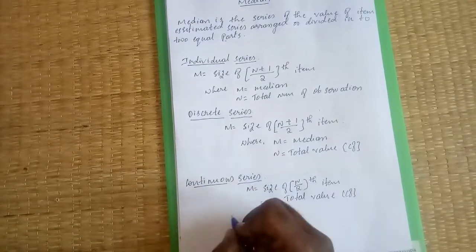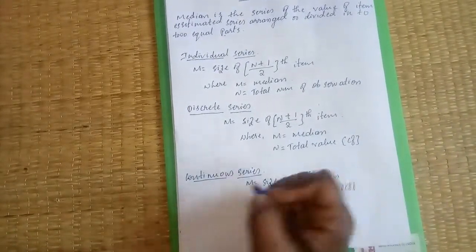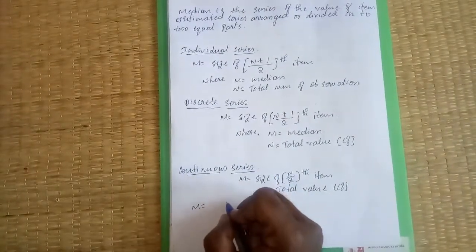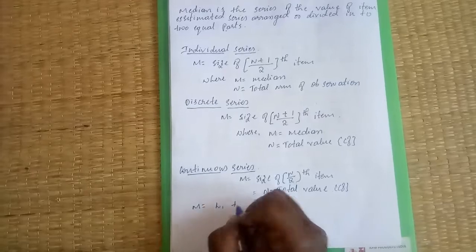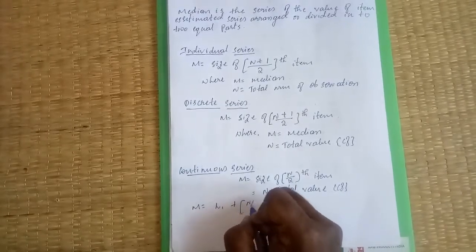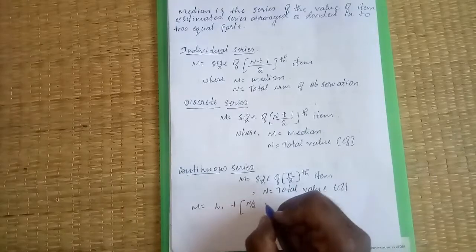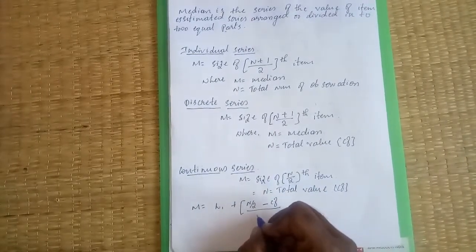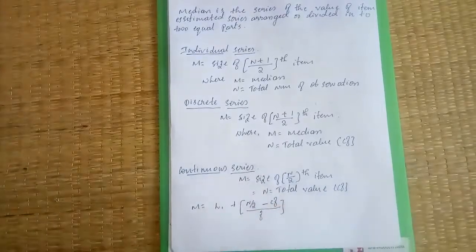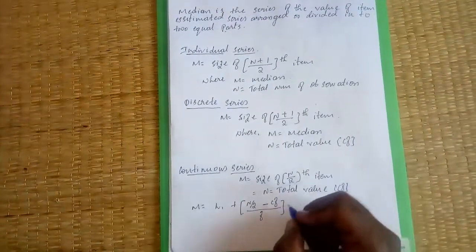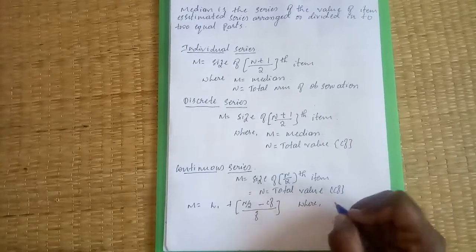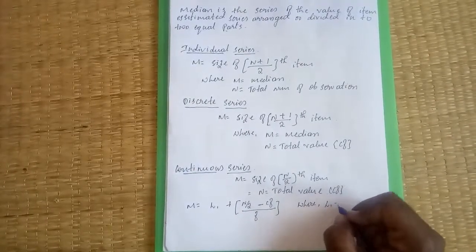For continuous series, the formula is M equals L1 plus n by 2 minus CF divided by F, where L1 equals lower limit of median class and n equals total number of observations.